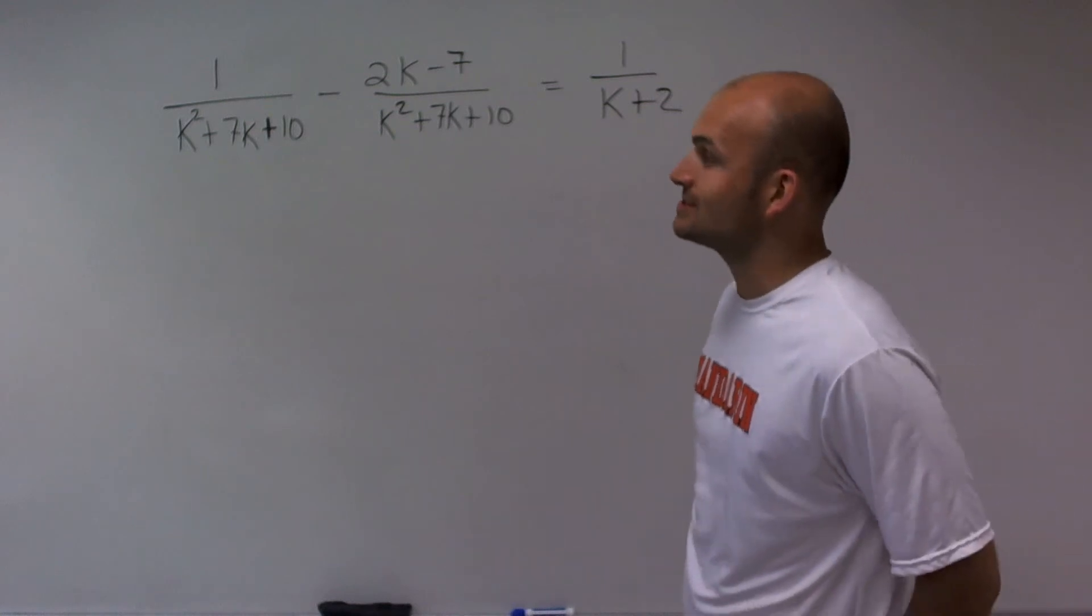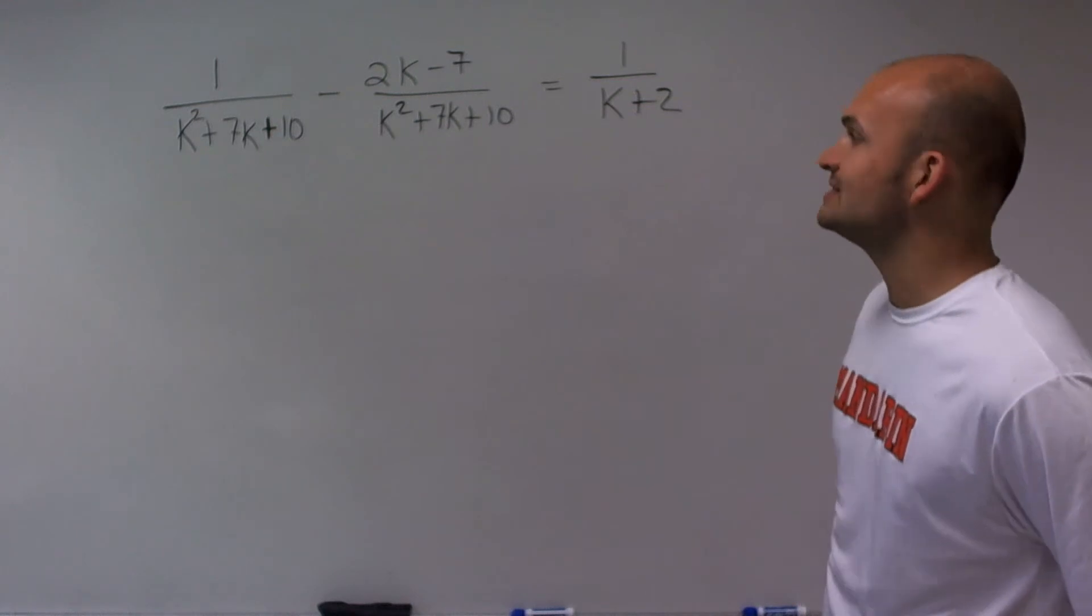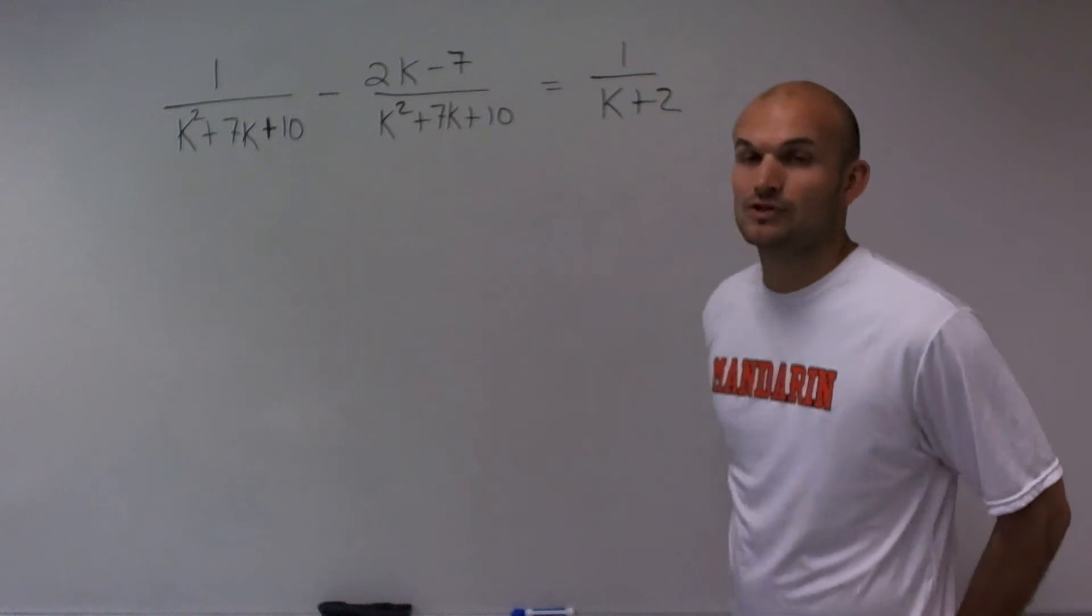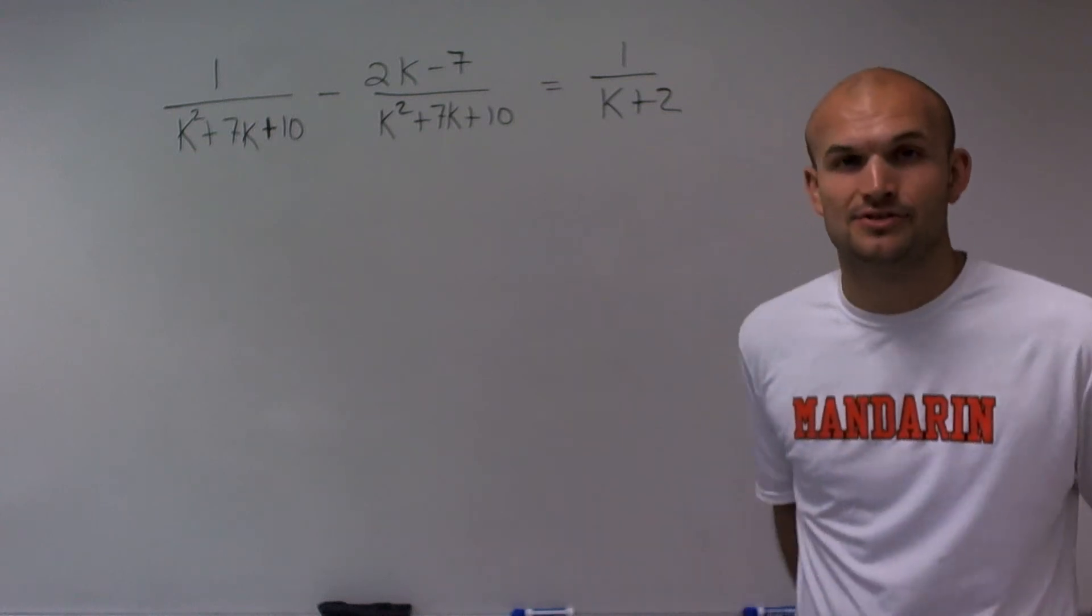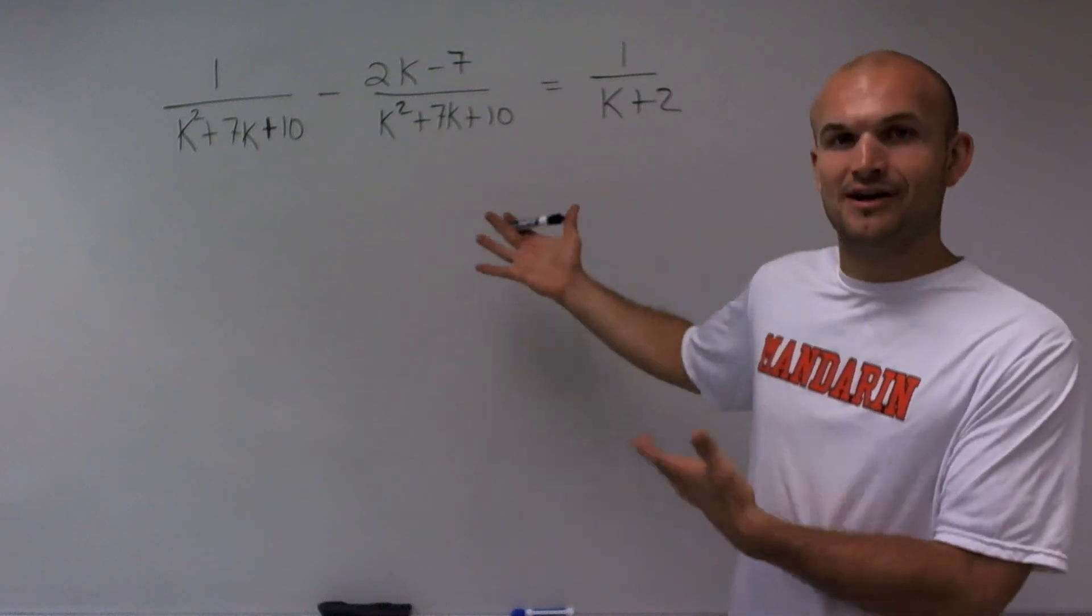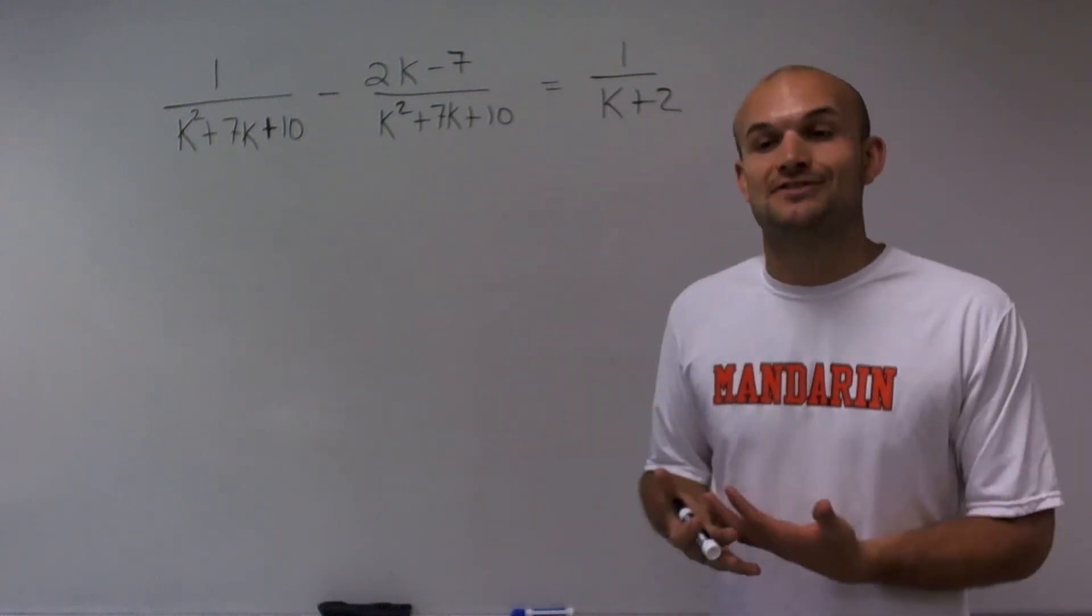I have 1 divided by k squared plus 7k plus 10 minus 2k minus 7 divided by k squared plus 7k plus 10 equals 1 divided by k plus 2. And I think it looks so complicated because there's so many variables and also it's rational. And a lot of students don't like rational terms.